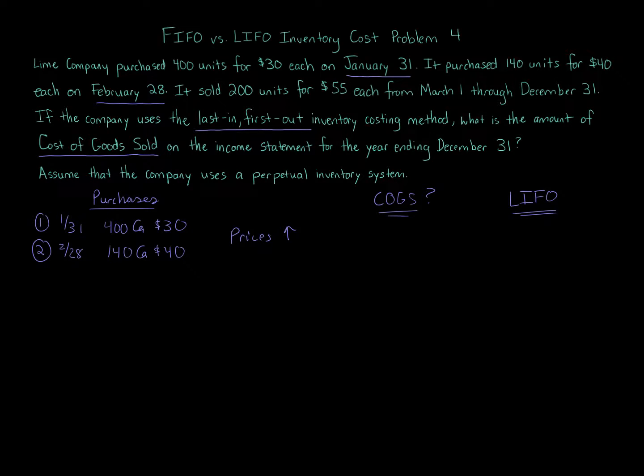Again, we're determining cost of goods sold. Next, we're told that the sales, there were 200 units sold for $55 each March 1st through December 31st. Now, one thing to note, the $55 each, irrelevant for this problem because we're asked about the cost of goods sold, which is about the cost of the units, historic cost principle. So the 30 and 40 that goes into that amount, and it's going to be from those various layers. How many specifically are sold? 200 are sold.